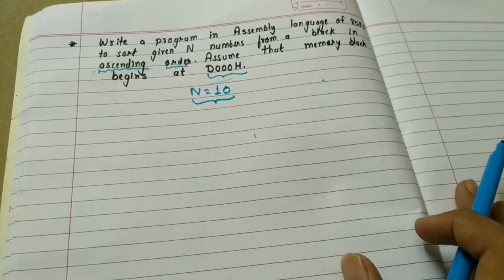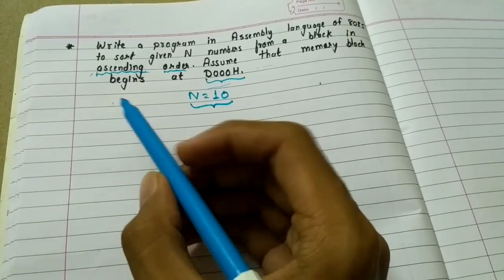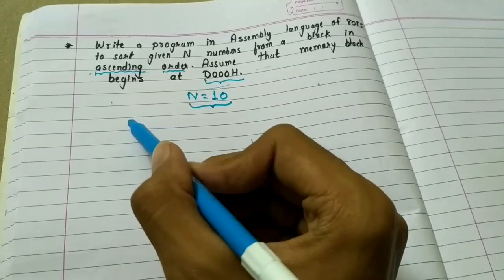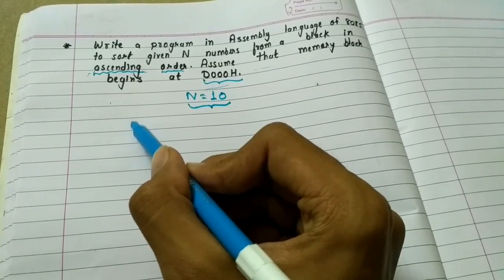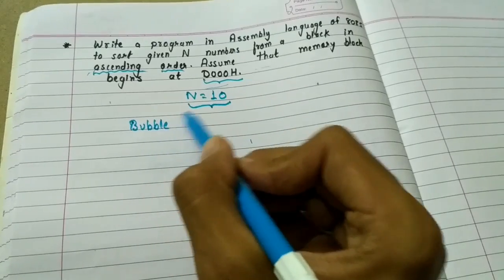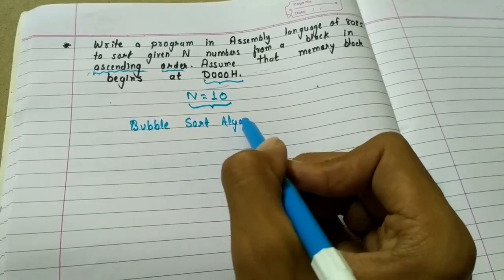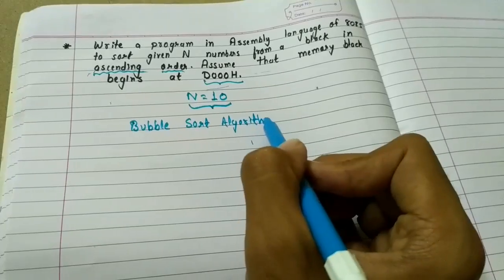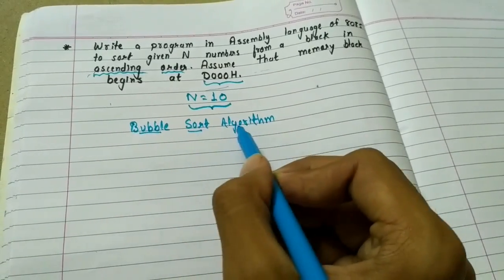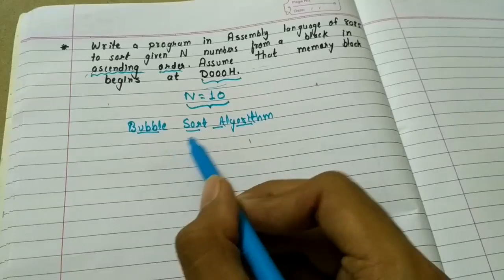The first step to write any program is to write its algorithm. Here we will use the bubble sort algorithm.